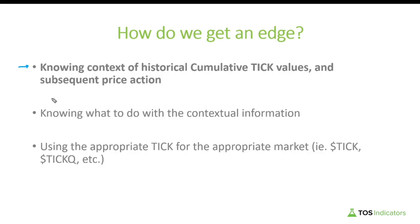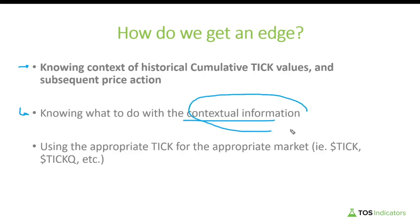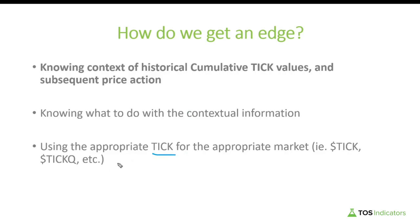A lot of folks just use purely the tick value, which on its own is useful — especially if you have multiple bursts of plus 1000 tick readings. But the cumulative tick gives you a better, more aggregate basis for doing something with that information. Knowing what to do with that contextual information is key. And for those who trade markets outside of just the S&P, using the right tick value — NYSE tick versus the NASDAQ tick — becomes really interesting depending on your platform.